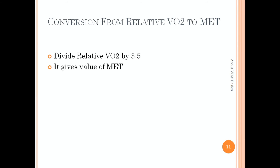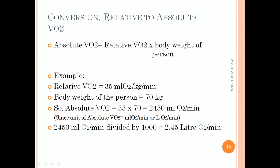The conversion of relative VO2 to MET can be easily done by dividing the relative VO2 by 3.5. Now we'll see how to convert relative VO2 to absolute VO2. Absolute VO2 is equal to relative VO2 multiplied by the body weight of the person. Continuing the previous example, the relative VO2 was 35 ml O2 per kg per minute and the body weight is 70 kg. So the absolute VO2 is 2450 ml O2 per minute. If you want to convert 2450 ml O2 per minute to L O2 per minute, just divide by 1000, giving an absolute VO2 of 2.45 liter O2 per minute.